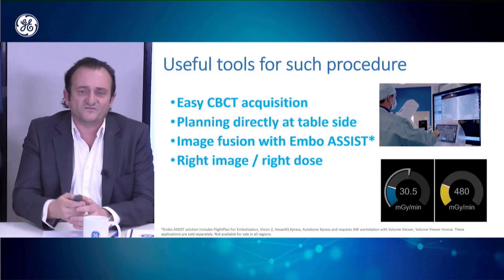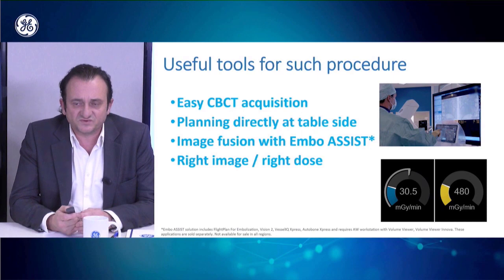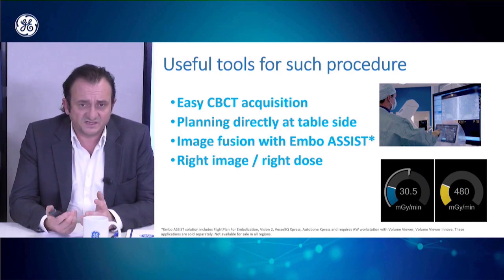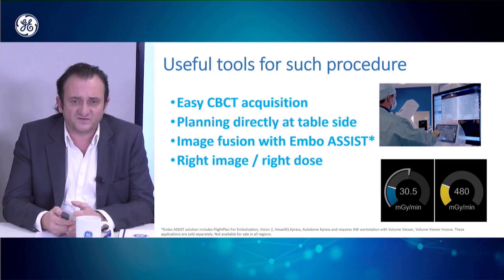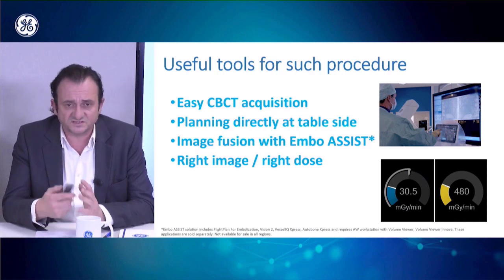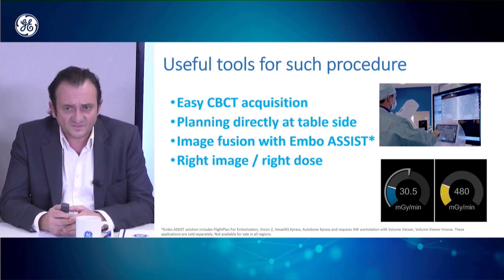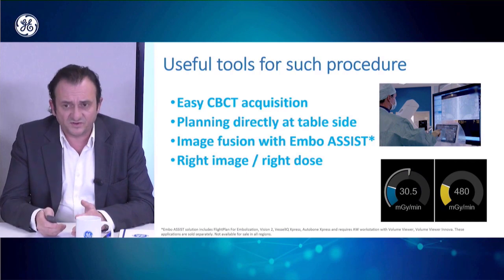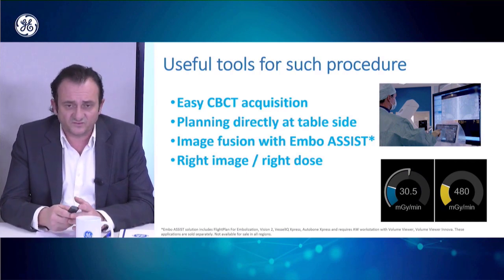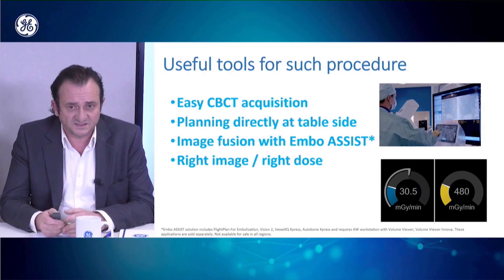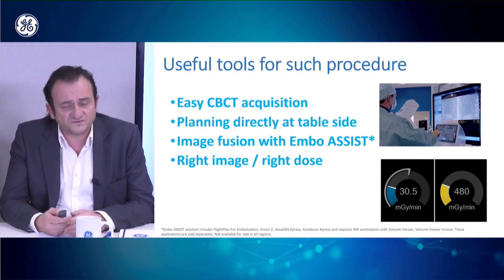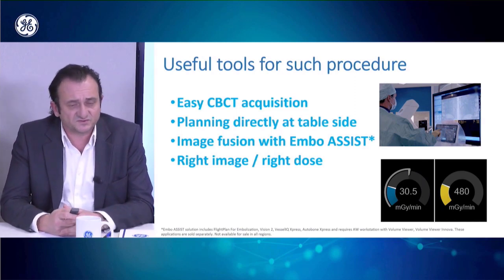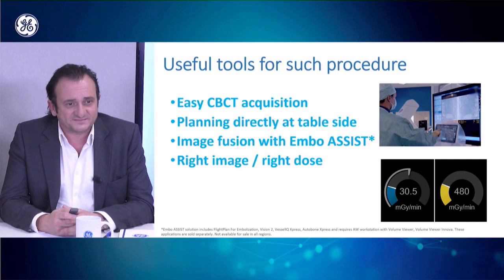Here is real-time use of Embo Assist, which is really very interesting. On the left you can see the real-time dose displayed with a blue color code. Here is the final position of the microcatheter and the final embolization. For me, what is really interesting with Alia is having easy CBCT acquisitions. I am at the tableside, I don't move, I don't have to ask anyone to do things — I can do my image fusion with the right dose for the right image.